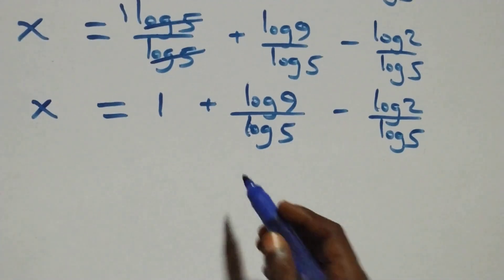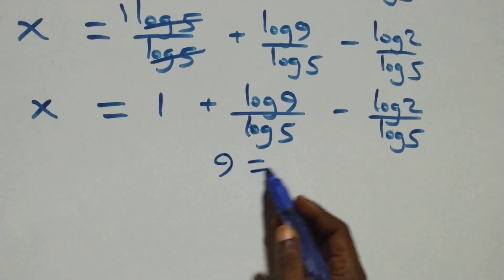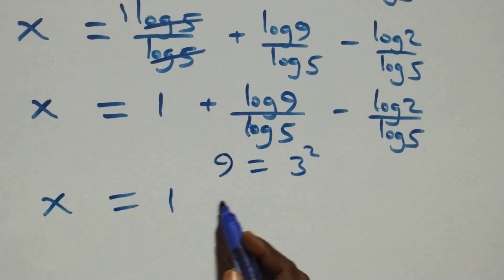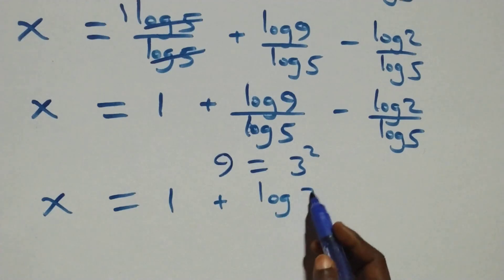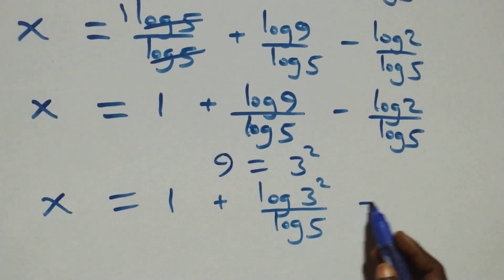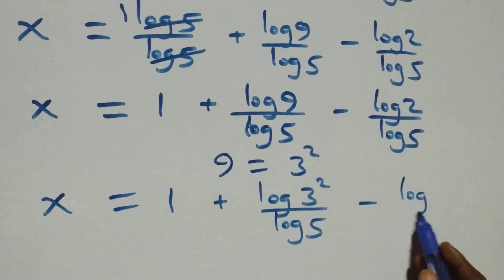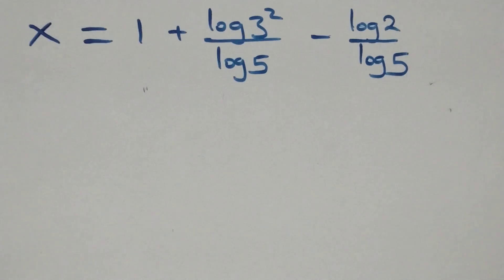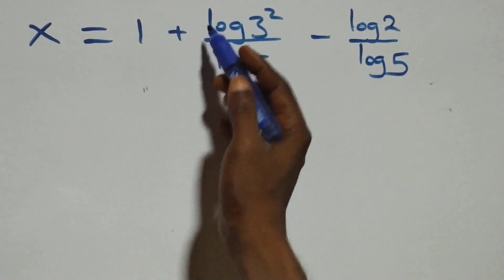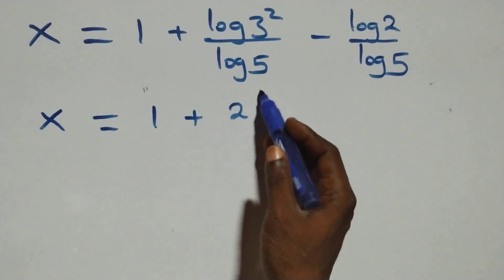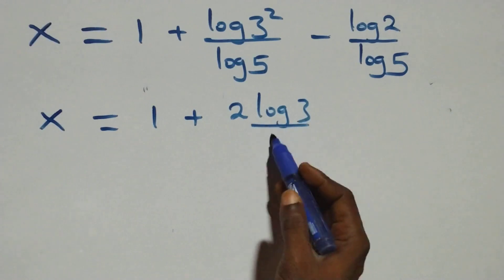Next step, we can express 9 as 3 times 3, which is 3 squared. So all we have becomes x equals to 1 plus log 3 squared over log 5, minus log 2 over log 5. We apply the power law of logarithm, so the 2 comes down and we have x equals to 1 plus 2 log 3 over log 5.